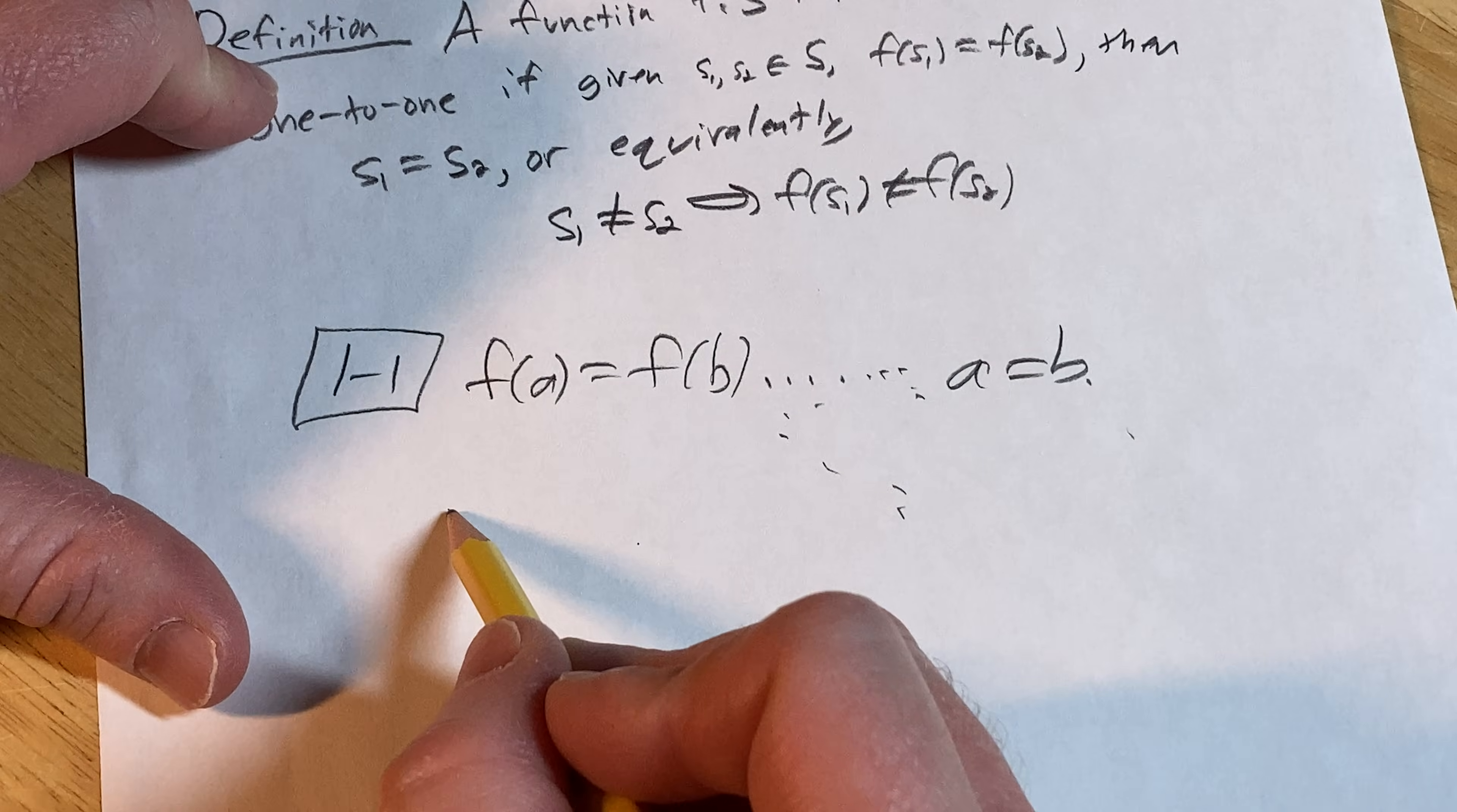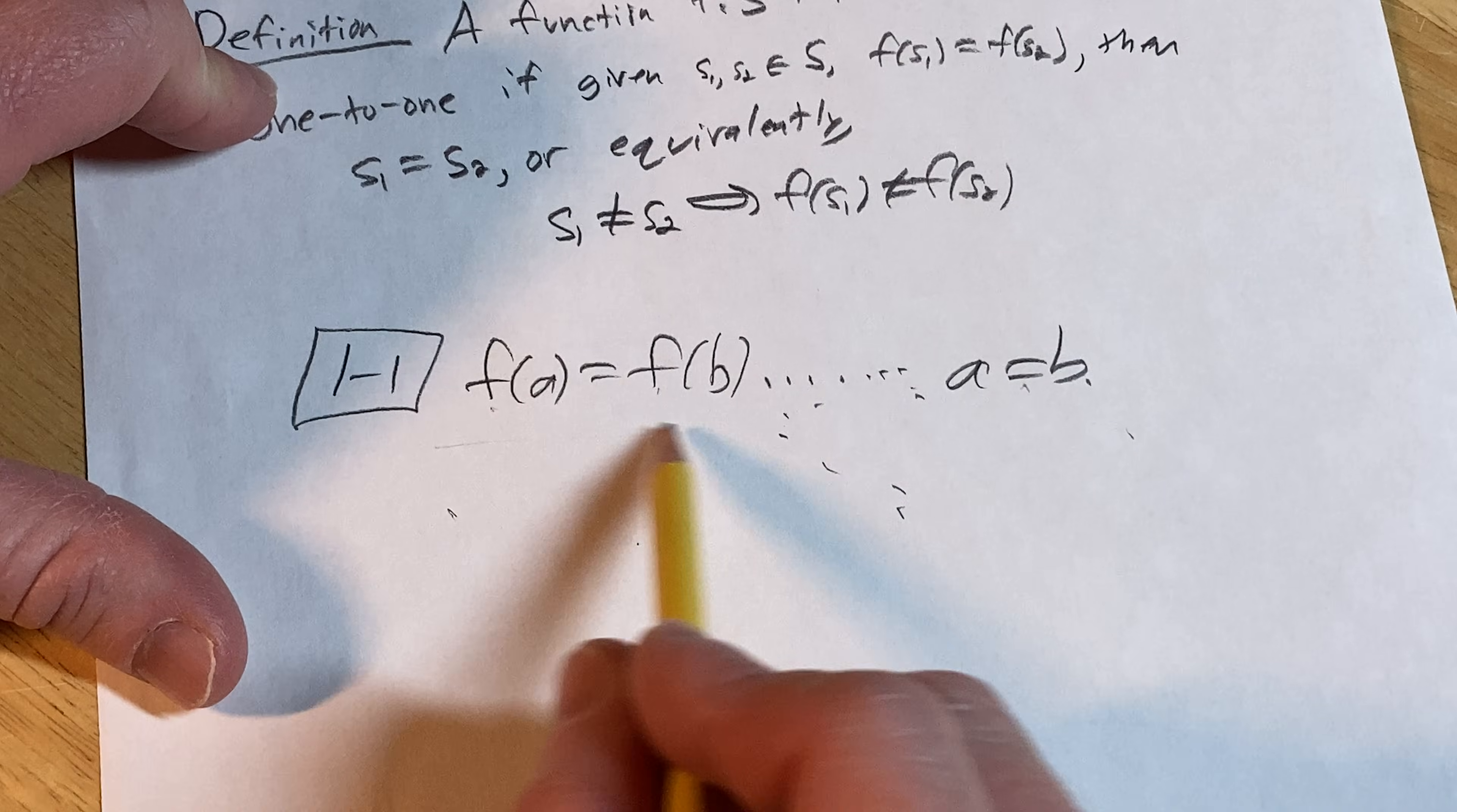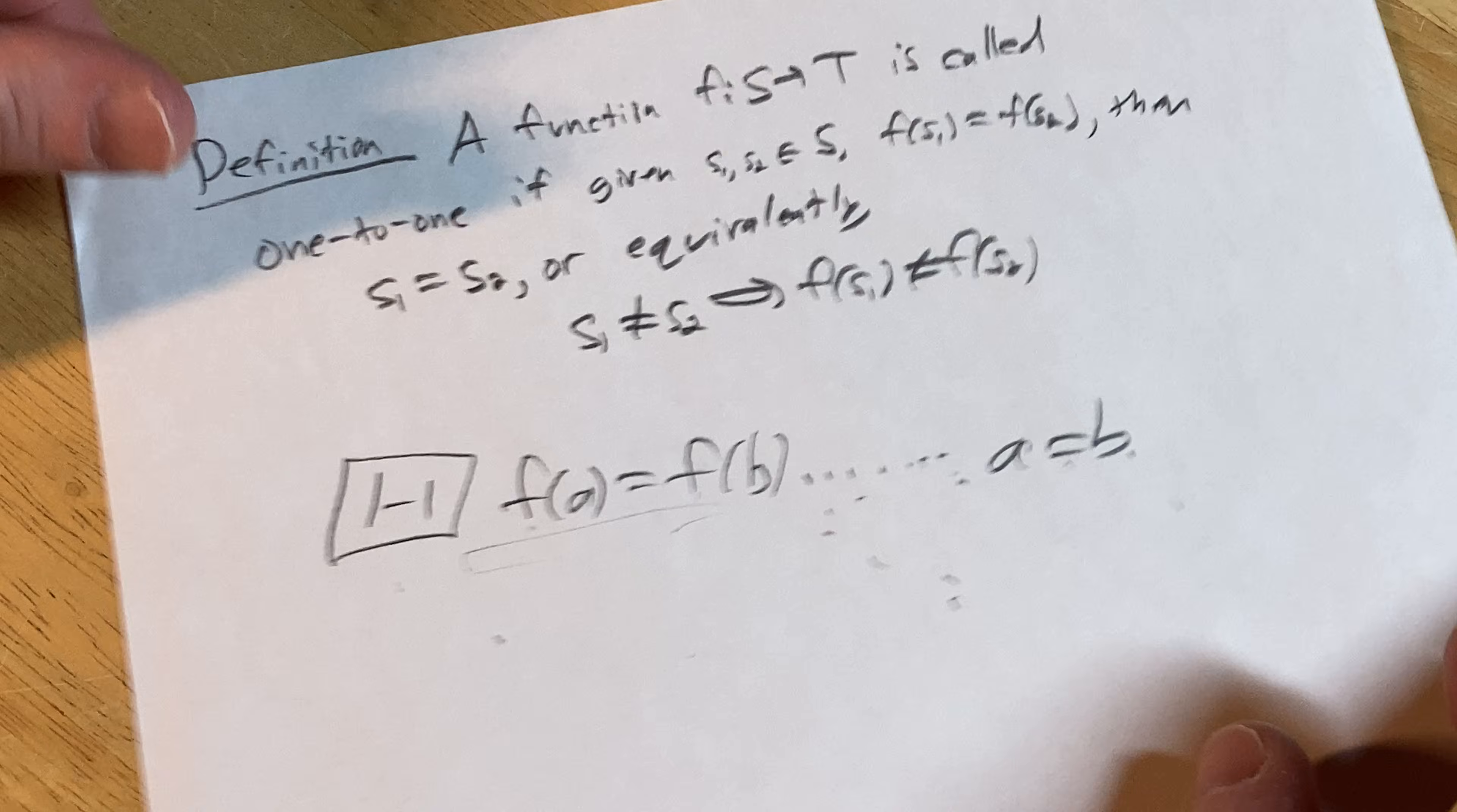Conversely, you could start by assuming a ≠ b, and then show that f(a) ≠ f(b). But the first approach is more typical in problems.